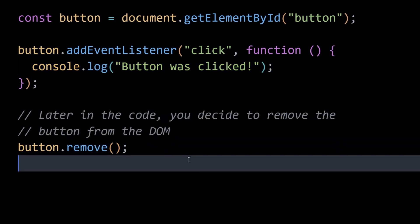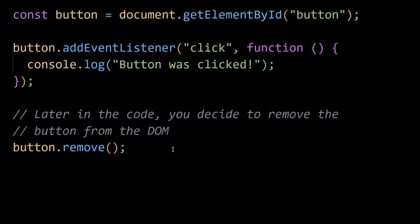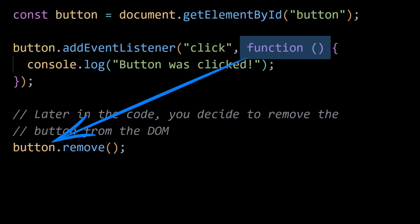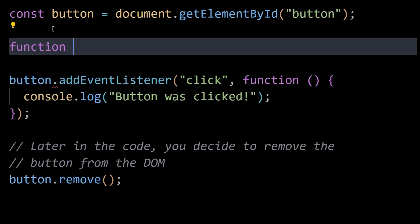Consider the following scenario: in this example, the event listener function is still in memory, retaining a reference to the removed button even though the button is no longer in the DOM. The event listener still exists and continues to hold the button in memory, causing a memory leak.